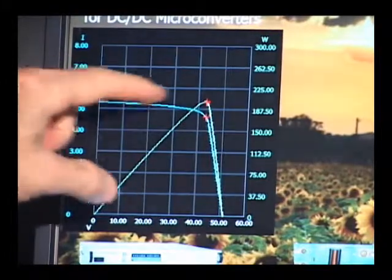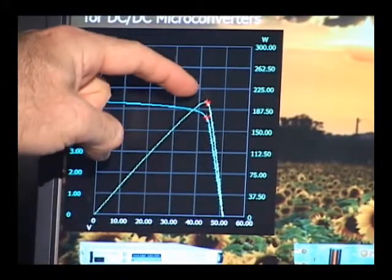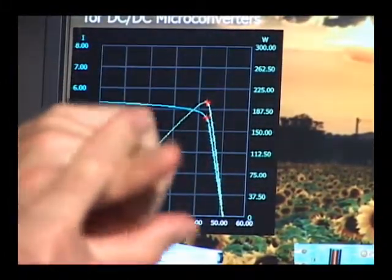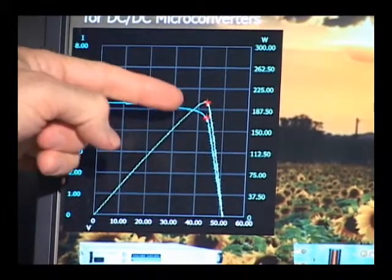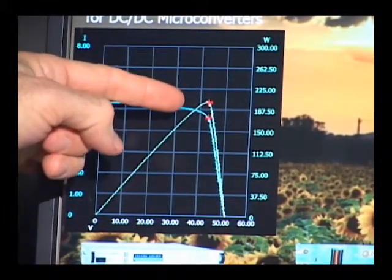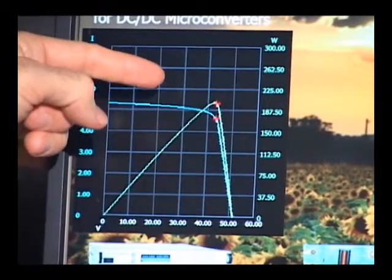And this is the present IV curve. Also the red crosshairs that you see on there, those red crosshairs are the actual operating point, the present operating point of the solar array simulator.